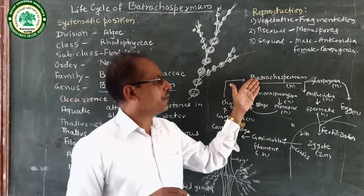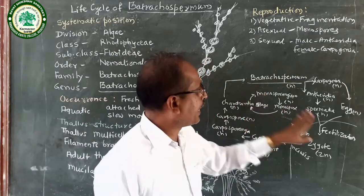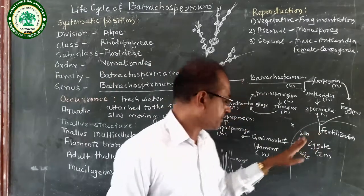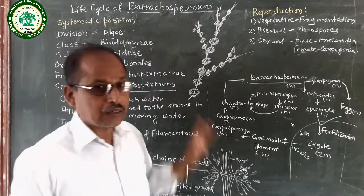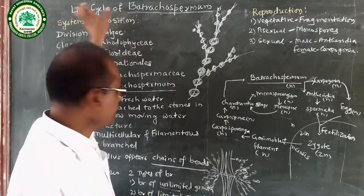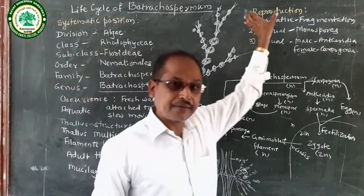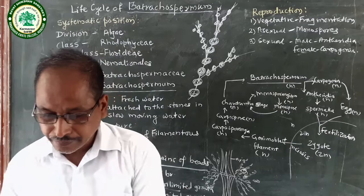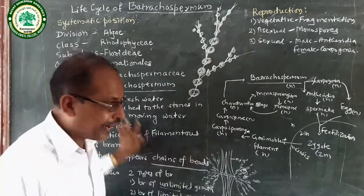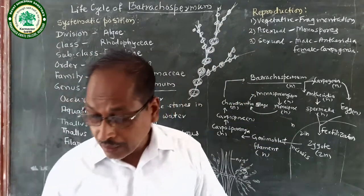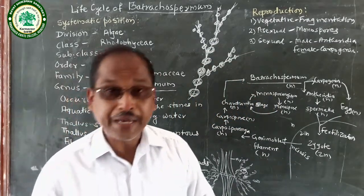The Chantransia stage develops into a new individual — Batrachospermum. This is the haploid stage, and the zygote is the diploid stage. These are the points in the life cycle: Systematic Position, Occurrence, Thallus Structure, and Reproduction. In this way, this is the life cycle of Batrachospermum. Thanks. In the next lecture, we will be studying the life cycle of Sargassum. Thank you.